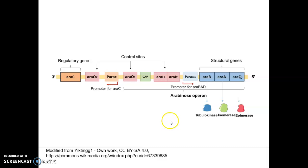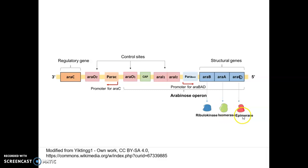Coming to the structural features of the Arabinose operon, there are three structural genes referred to as araB, araA, and araD, which ultimately give rise to three different enzymes named ribulokinase, isomerase, and epimerase.